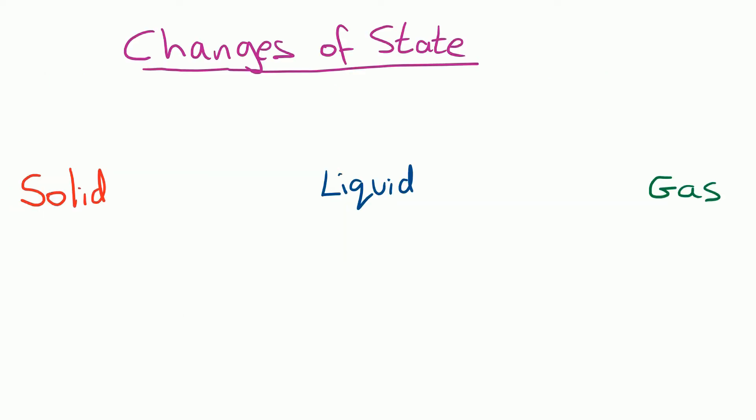You must make sure you know the names for the different changes of state. So a solid going to a liquid is called melting. That could be a solid bar of chocolate melting in the sun. A liquid going to a solid is called freezing. Now that doesn't have to be at zero degrees in a freezer. If you've heated up some chocolate to pour into molds and allow it to cool at room temperature, it will cool back into a solid, so we still call that freezing.